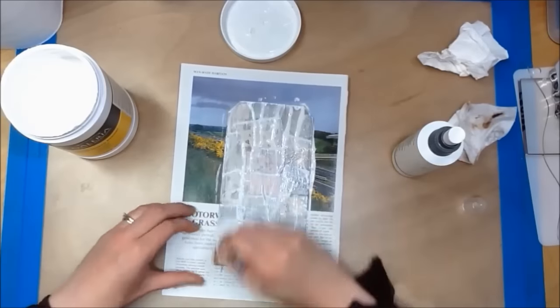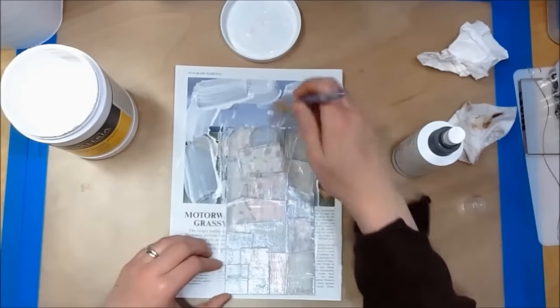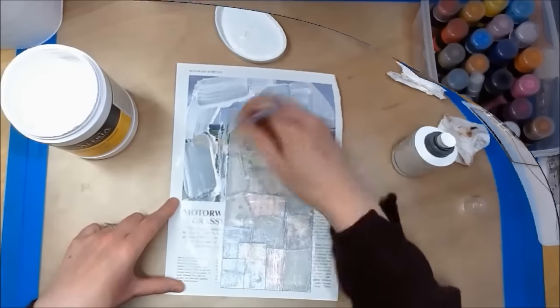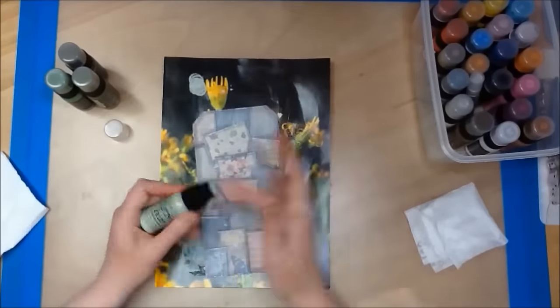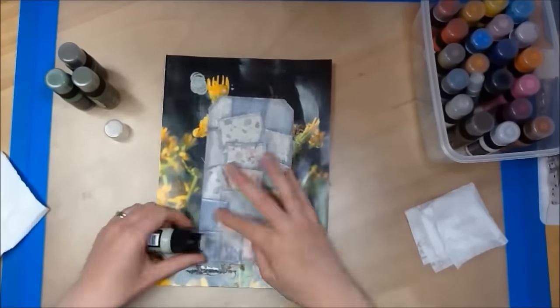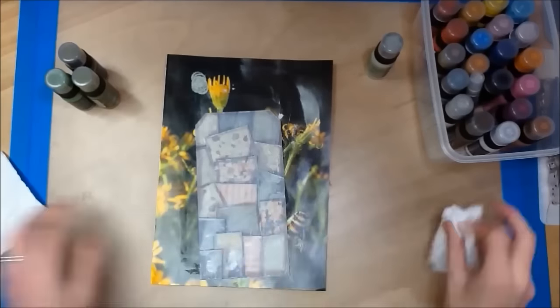So now I am using my white gesso watered down to knock back the colors of my tag. Once the gesso had all dried I then use my Distress paints to add some color to the background.